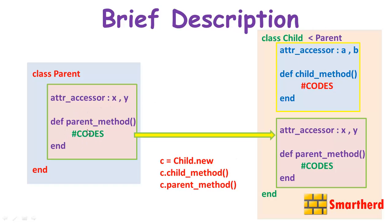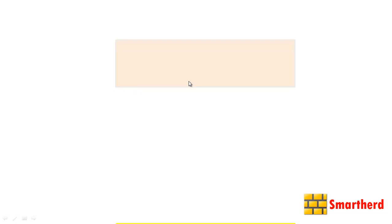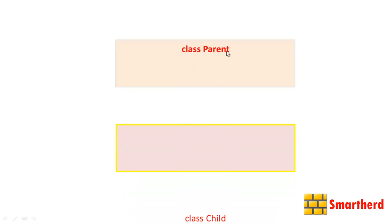In short, all the code of the parent class becomes part of the child class — pretty simple. Now, we had two classes: the first was Parent and the second was Child. The class Parent is a user-defined name, and so is Child — you can name them whatever you wish.